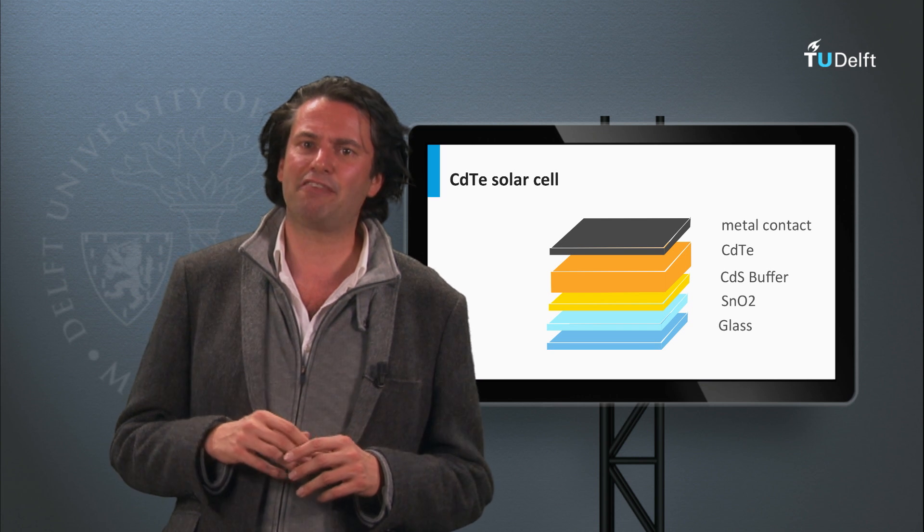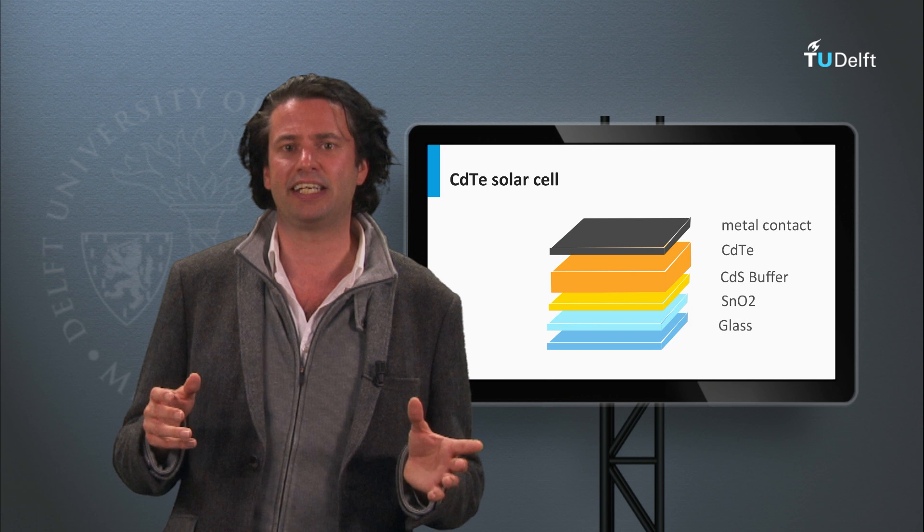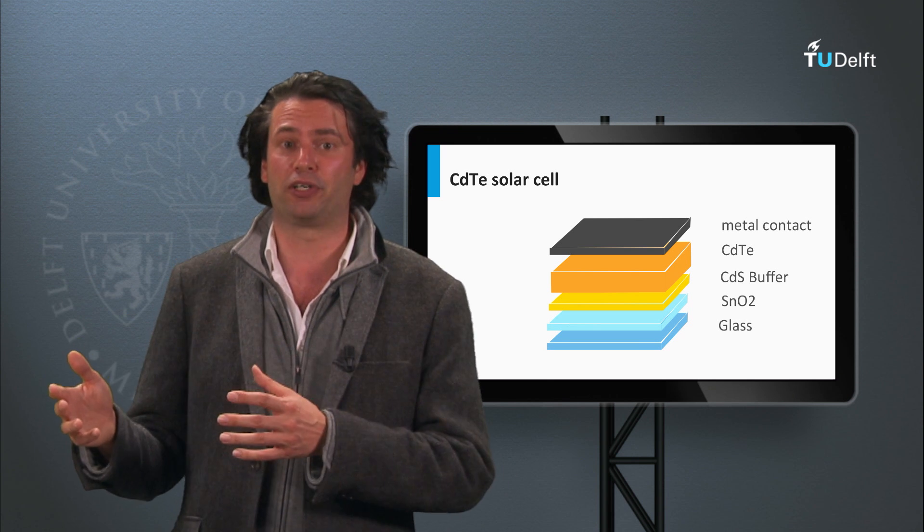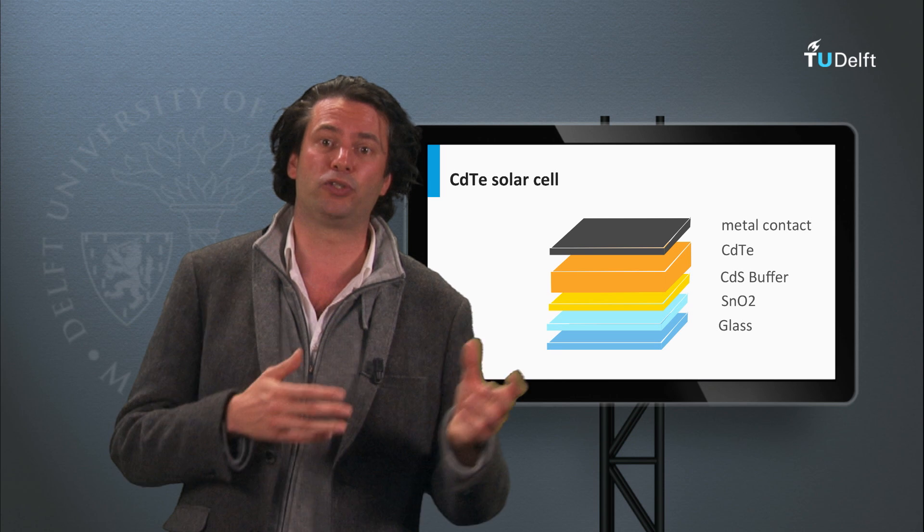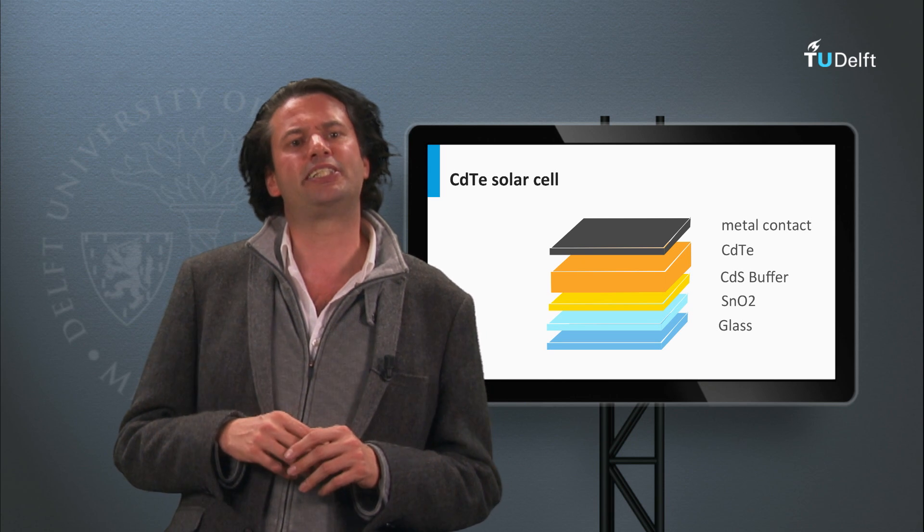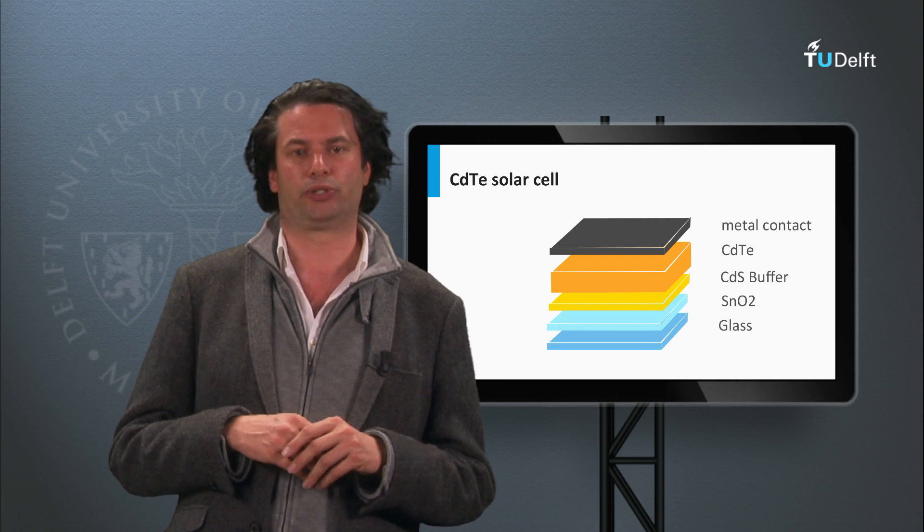Copper containing contacts have been used as backcontacts. However, in long time scales they may face instability problems due to the diffusion of copper through the cadmium telluride layer up to the cadmium sulfide buffer layer. Nowadays a stable antimony telluride layer in combination with molybdenum is used.